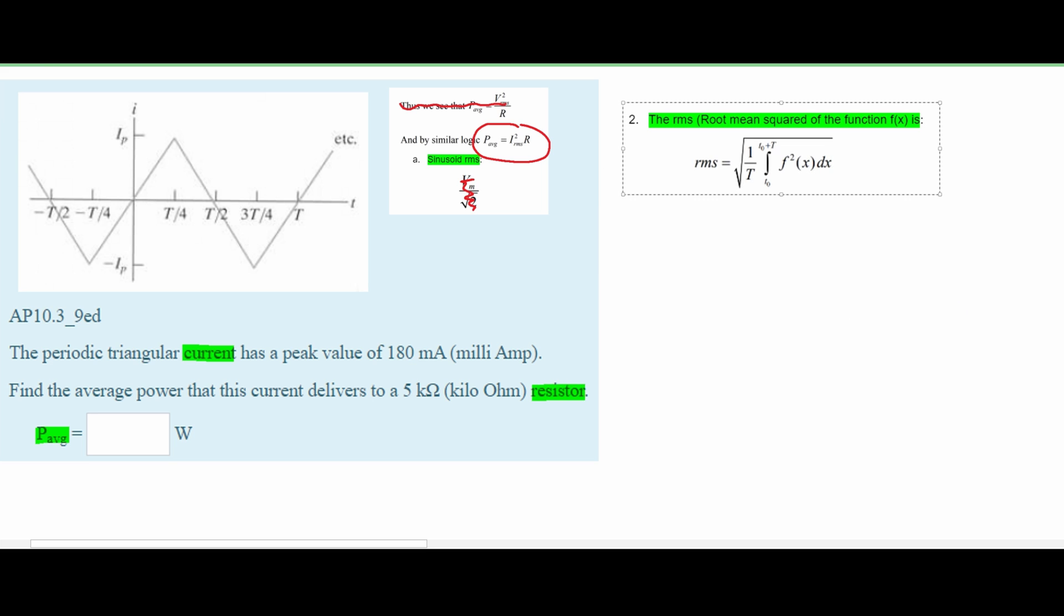To do that we're going to use this formula. Both of these are in the notes below the like button. This formula gives us the RMS and it equals the square root of one over T times the integral from T0 to T0 plus T of our equation squared, and then we need to derive it. So we want to find our I_rms.